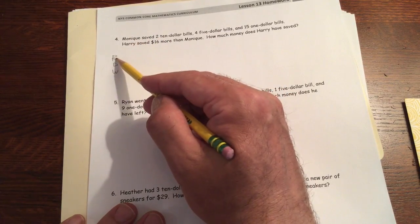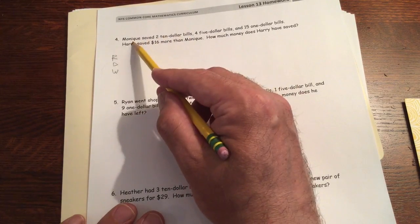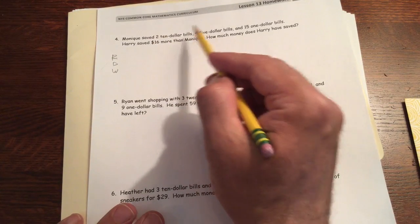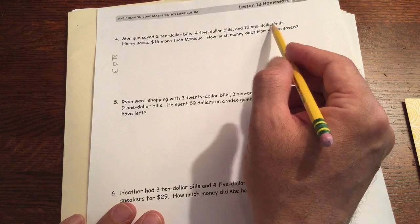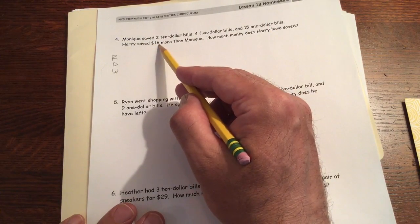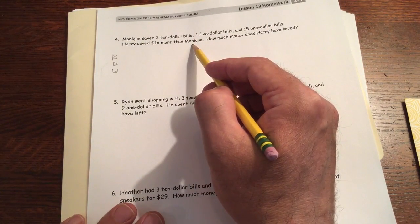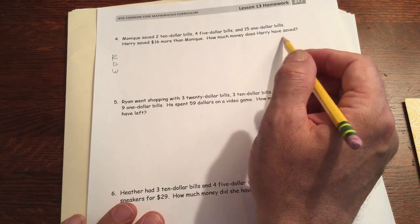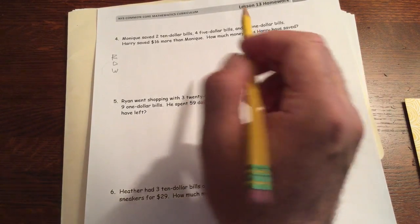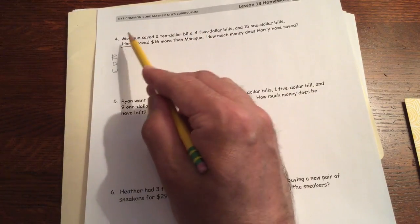First, we've got to read it. R for read. Monique saved two $10 bills, four $5 bills and $15 in $1 bills. Harry saved $16 more than Monique. How much money does Harry have saved? So what do we have here? We have Harry and we have Monique.